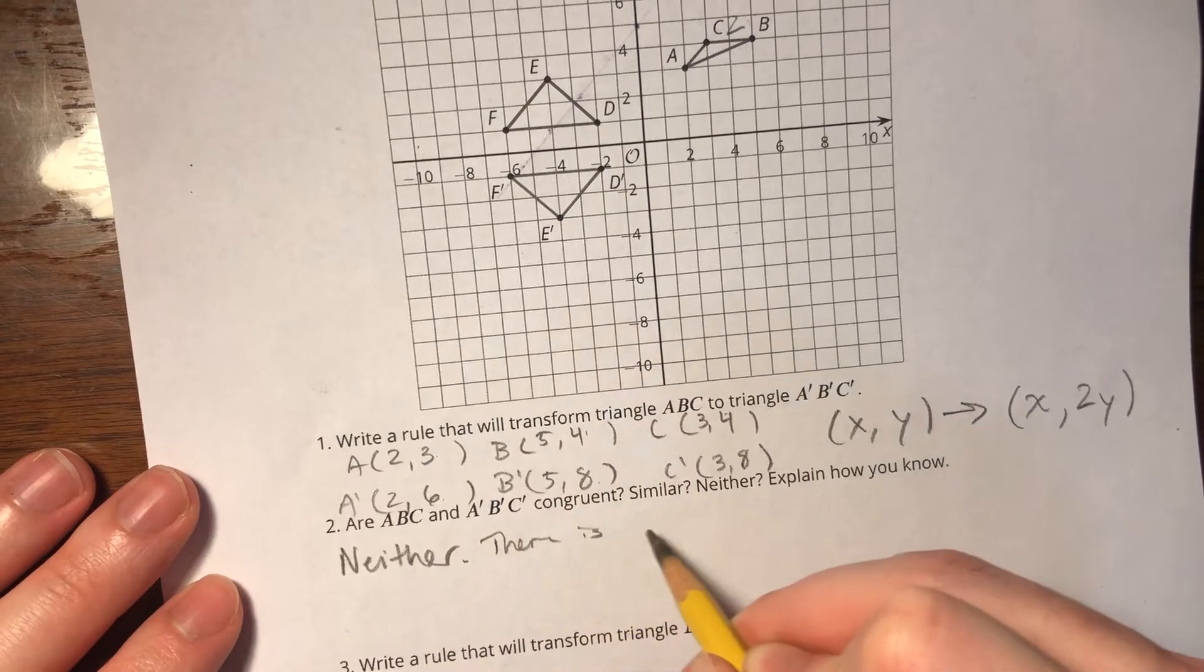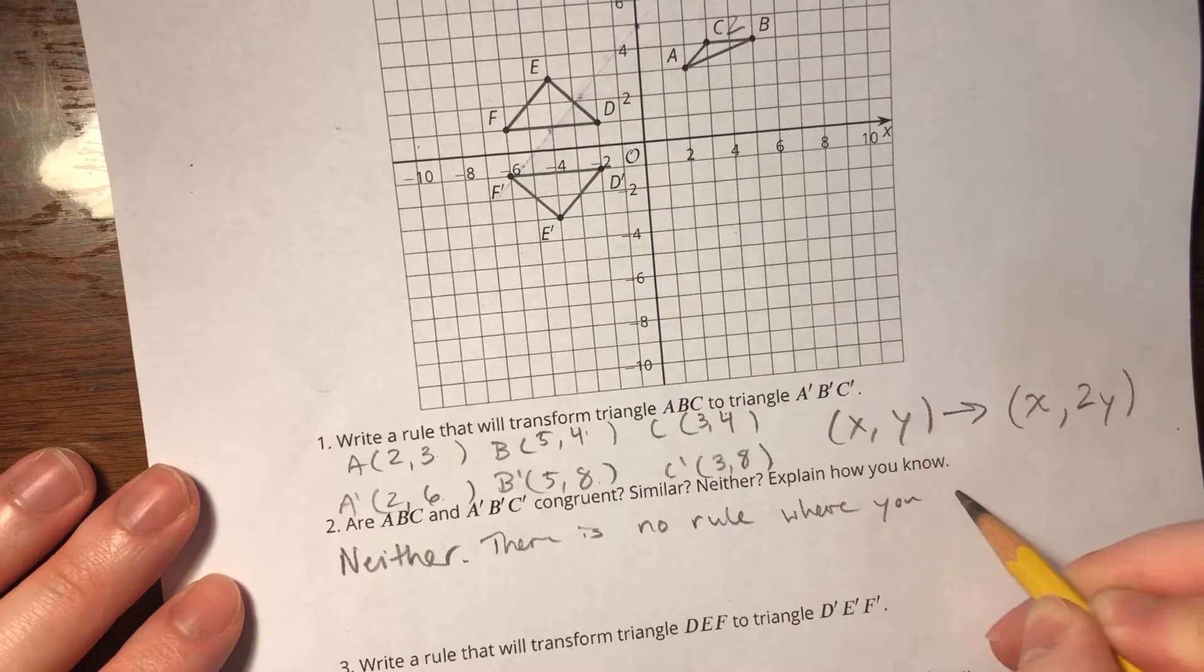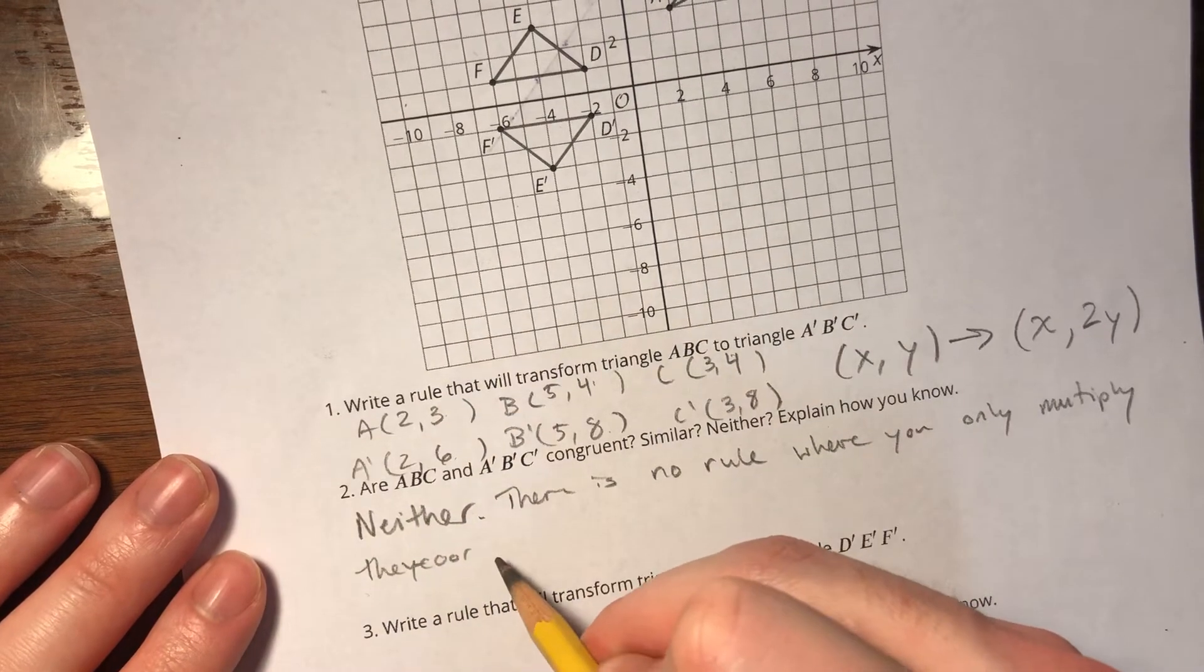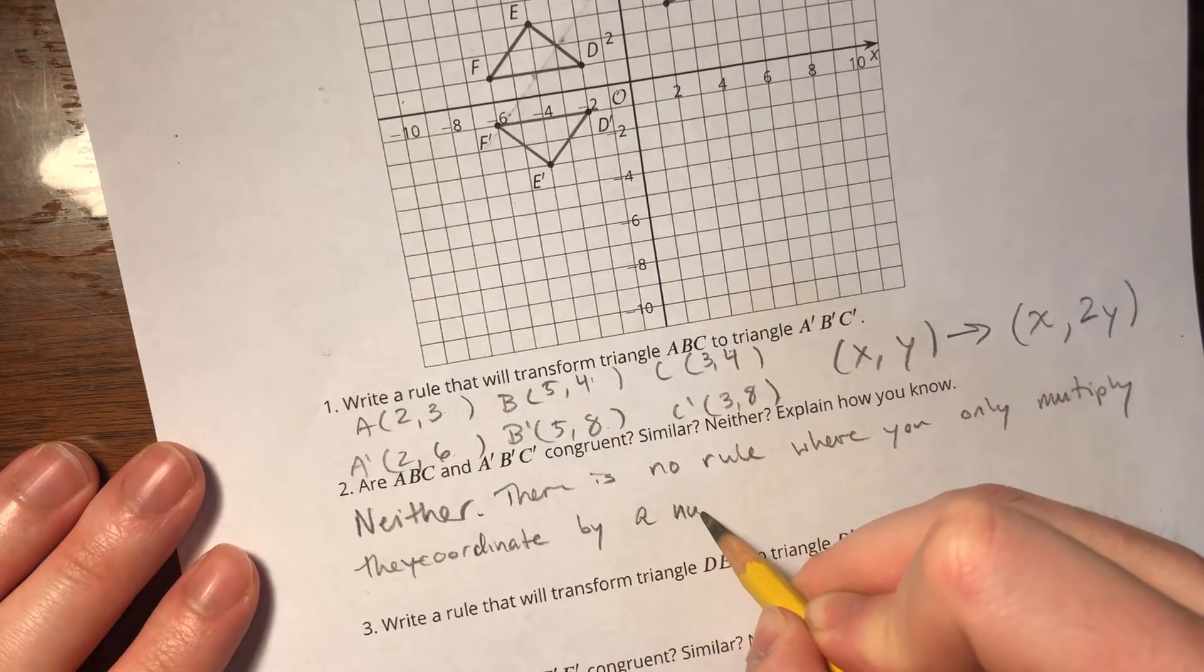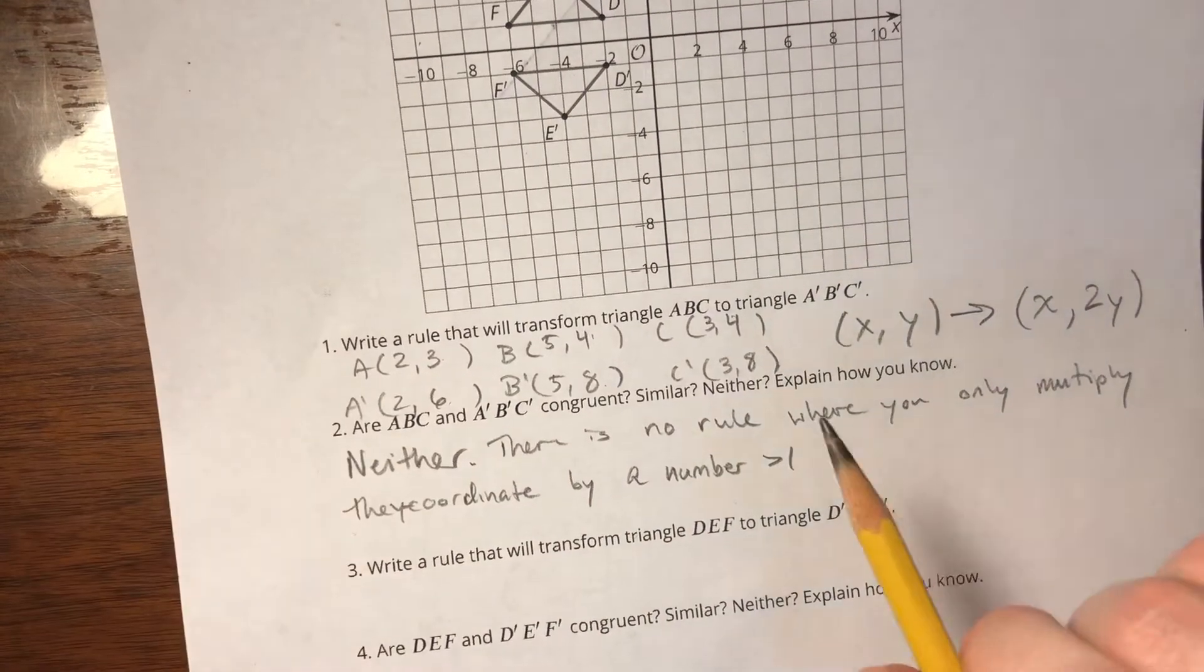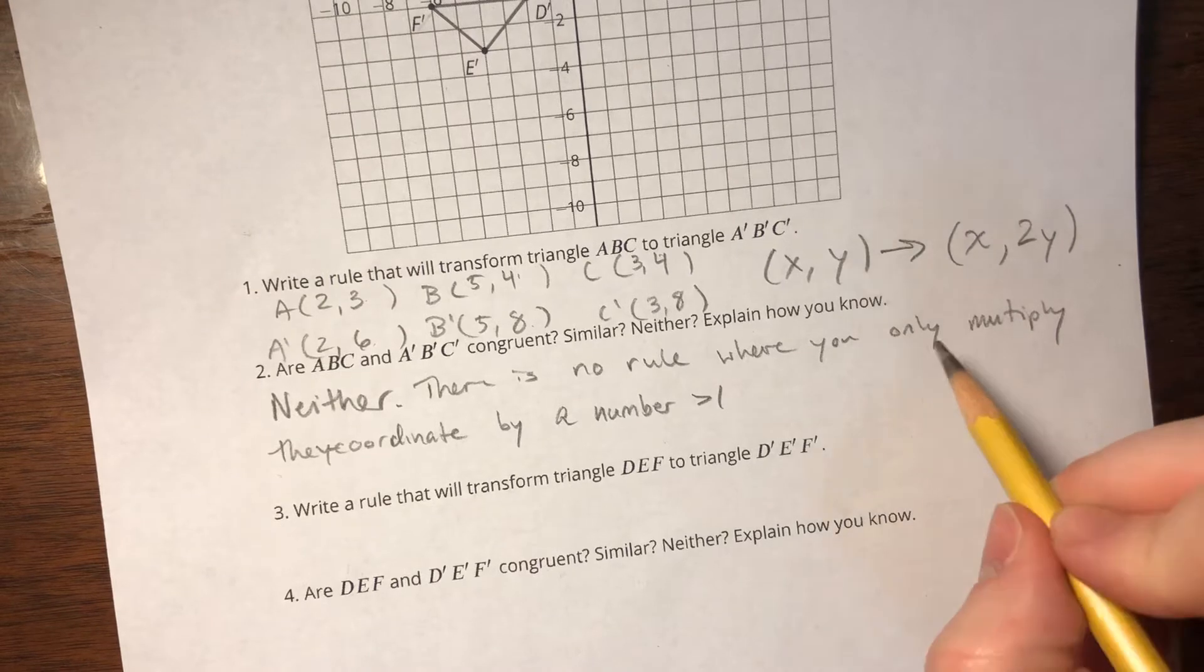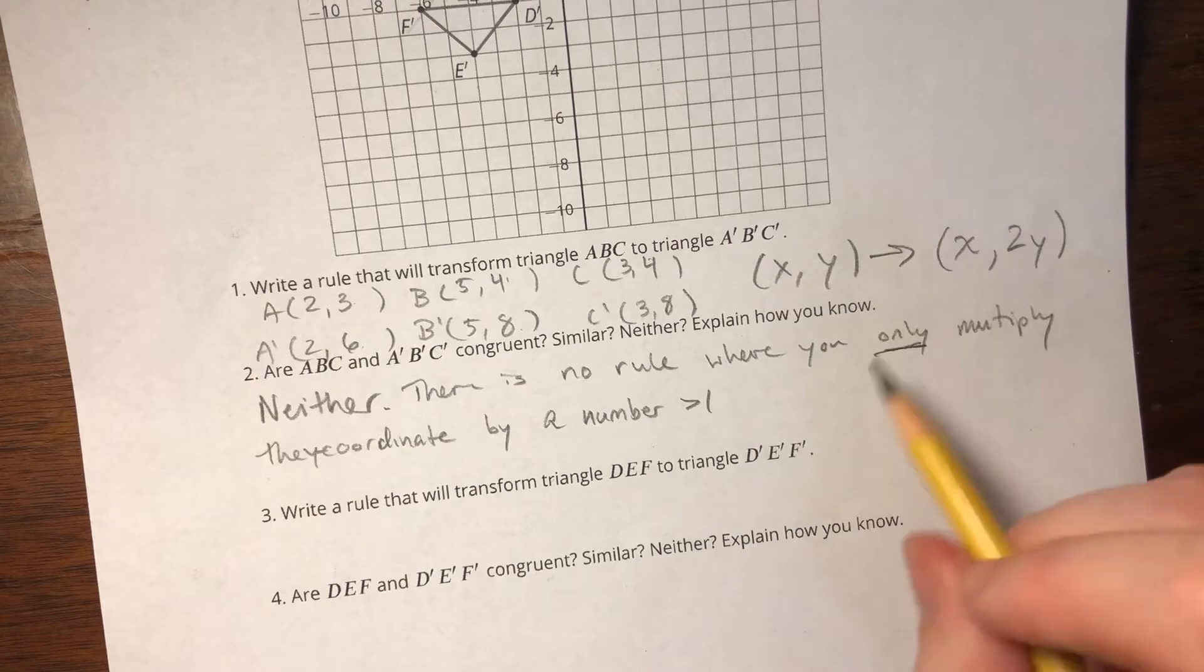There is no rule where you only multiply the y coordinate by a number greater than 1. So we can definitely multiply y by 1 or multiply y by negative 1. But we never, I'm sorry, I should say only, right? That's the keyword there.